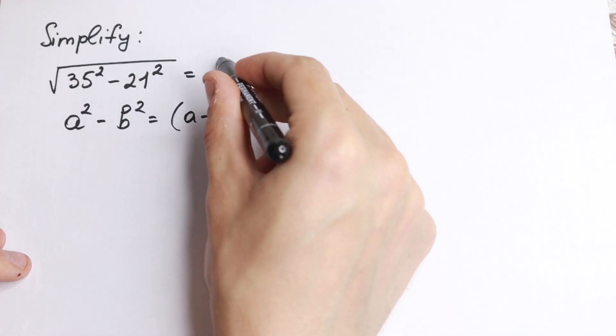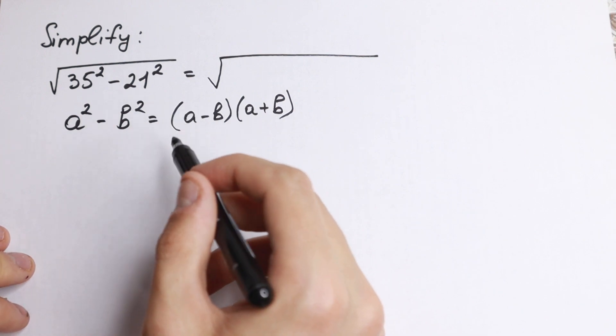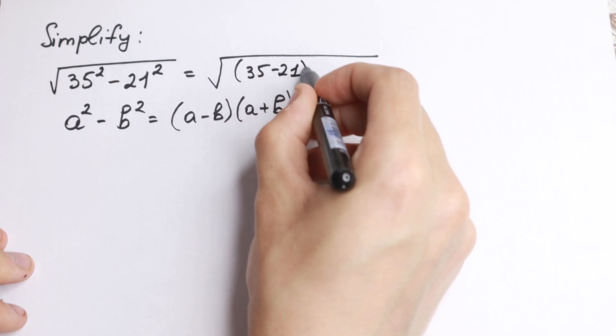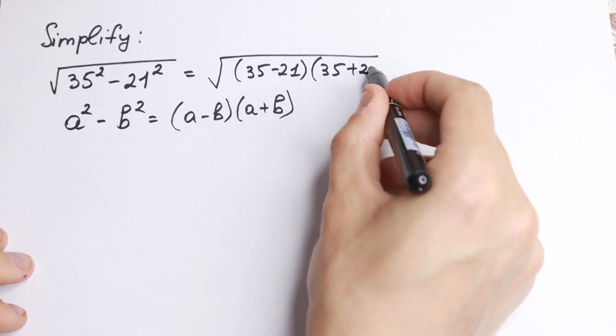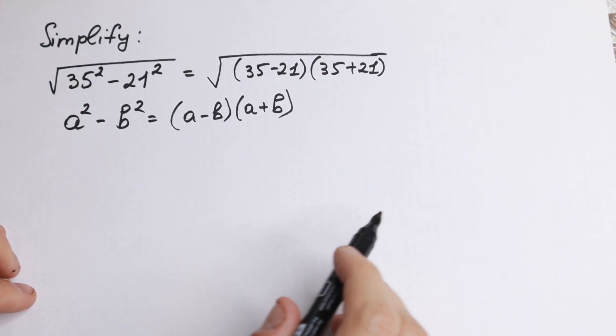So let's use this formula right here. We have difference of squares a minus b and a plus b. We will have 35 minus 21, times 35 plus 21. So we just write it using this formula.